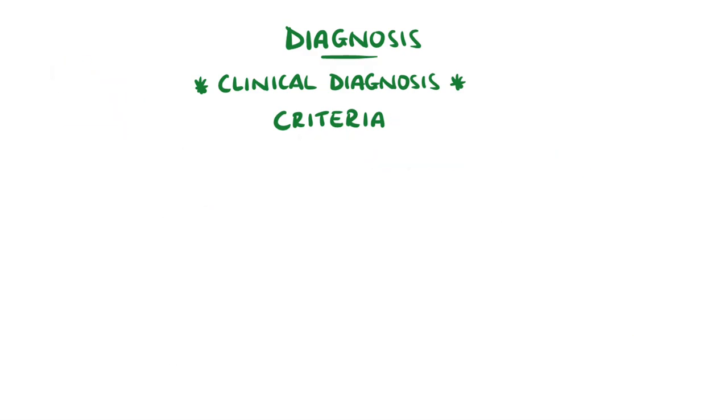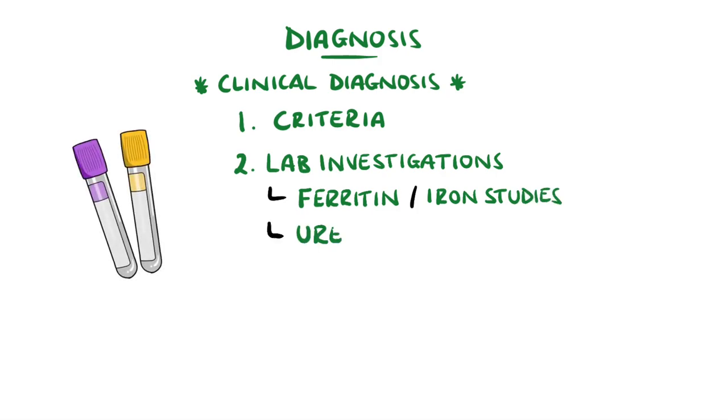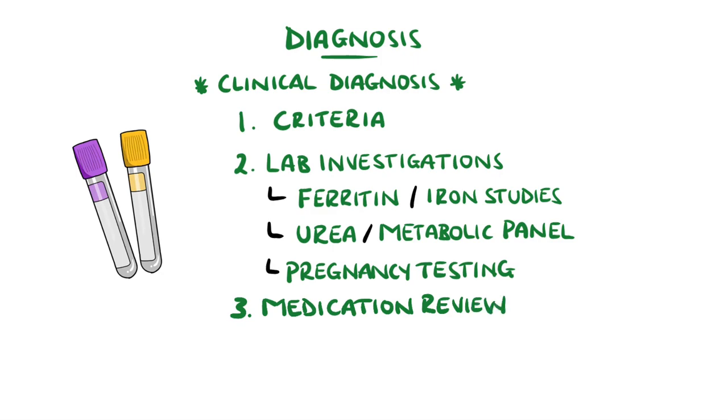The presence of iron deficiency, pregnancy, or uremia may point towards a secondary restless leg syndrome. This will likely improve once these factors are corrected, therefore blood tests, including ferritin, are routinely done. Medications should also be reviewed as they may well be the cause.